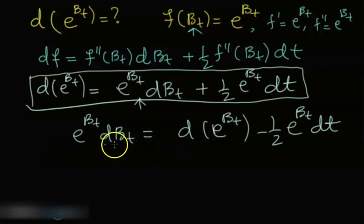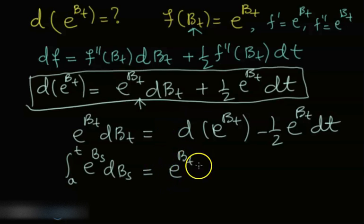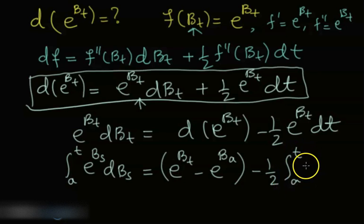Now if we integrate both sides, let's say integrate from a to t, then it is going to be e to the B_s dB_s, because I can't write the same variable like this. So this is going to be, if I integrate this, it is going to be e to the B_t minus e to the B_a, then minus one half integral from a to t e to the B_s ds. That gives you an expression for